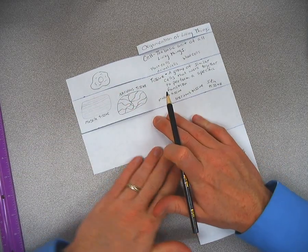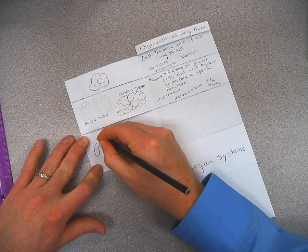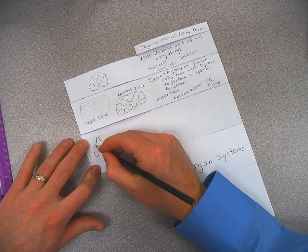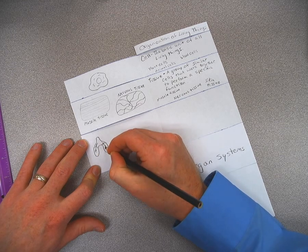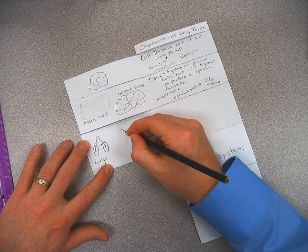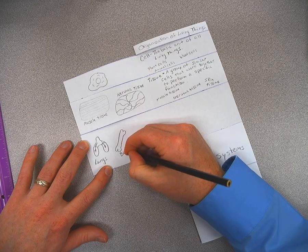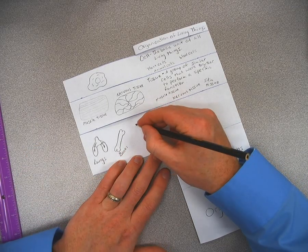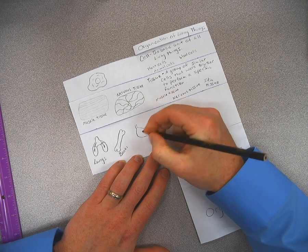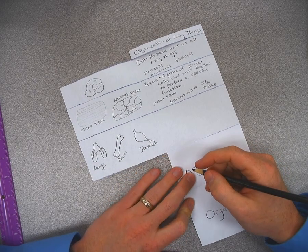The next flap is organs, okay, there's lots of different organs. You've got lungs, okay, kind of like that, so I'm going to label that one. You've also got bones and you've also got your stomach. Okay, just a couple of the organs there.